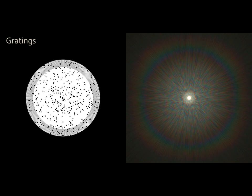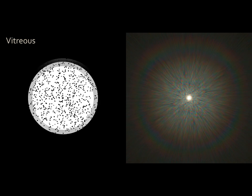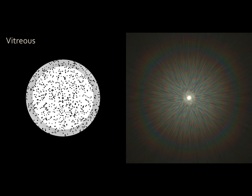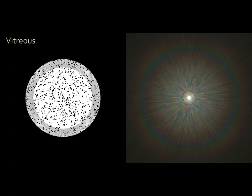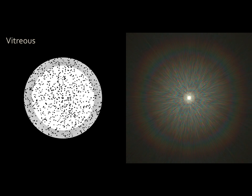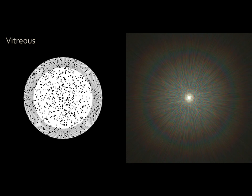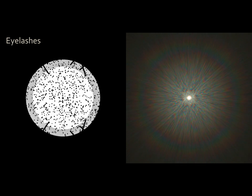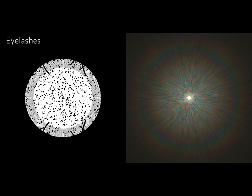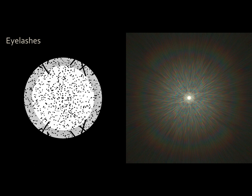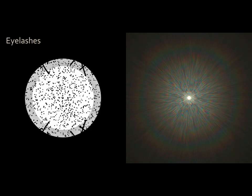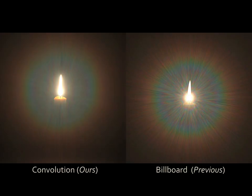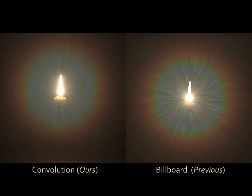A second kind of particles in the vitreous adds a different kind of motion to the final result. We model those particles as embedded into a rigid body with damped dynamics. Optionally, eyelashes as an external source of glare can also be included, but they only explain some forms of temporal glare and are seen only under extreme conditions. We use a convolution to apply the PSF to an output image in real-time, allowing correct results for light sources of a non-trivial shape, such as this candle.